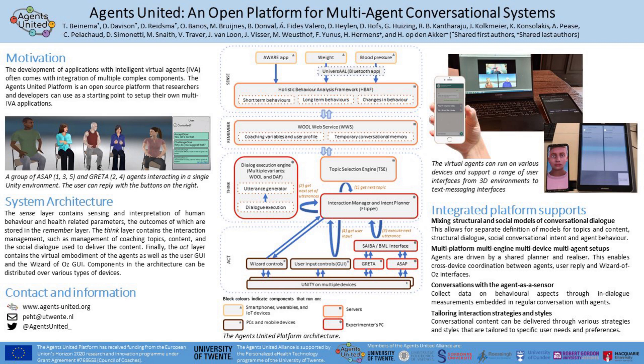The HBAF detects the user's physical (e.g., walking), social (e.g., having a conversation), emotional (e.g., feeling happy), and cognitive (e.g., reading a book) behaviors. These classes of information have been selected for their potential to ground opportunities for behavior change through coaching conversations, although the HBAF's architecture is not necessarily limited to those classes. Furthermore, behavioral data is analyzed at different time scales, affording the detection of short-term behaviors (e.g., sitting on a chair), long-term behaviors (e.g., being sedentary), and changes in these behaviors over time.